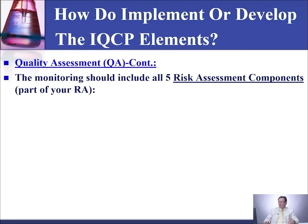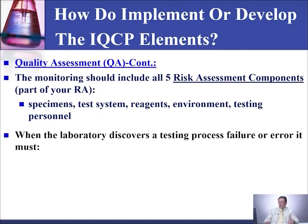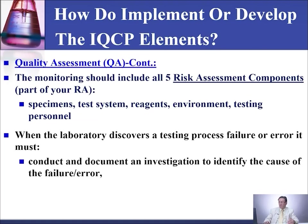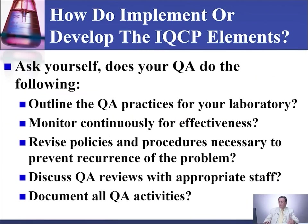Also, evaluate whether any changes need to be made in the QC plan process. The monitoring should include all five risk assessment components: the specimen, the test system, reagent, environment, and testing personnel. When the laboratory discovers a testing process failure or error, it must conduct and document an investigation to identify the cause of the failure, determine its impact on patient harm, and make appropriate modifications to their QC plan to control the failure. At the end, ask yourself: does your quality assessment outline QA practices, monitor continuously for effectiveness, revise policies and procedures to prevent reoccurrence, discuss QA reviews with appropriate staff, and document all QA activities?